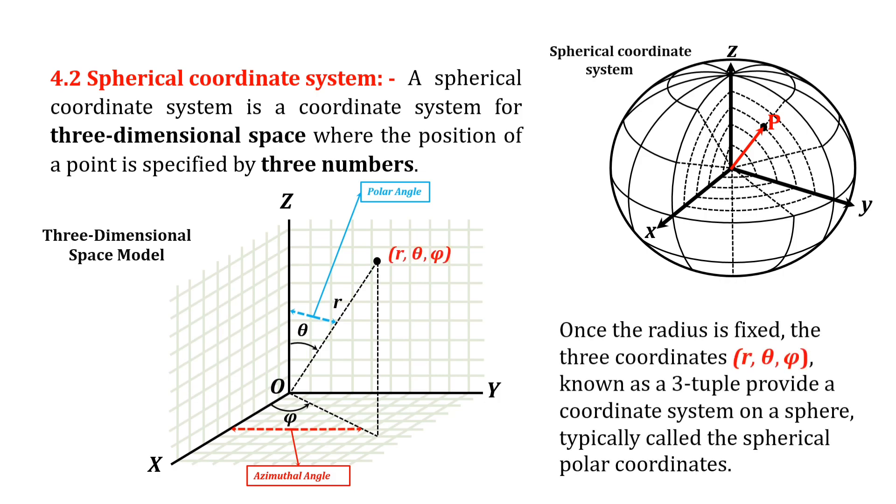Once the radius is fixed, the three coordinates R, theta, phi, known as a three-tuple, provide a coordinate system on a sphere, typically called the spherical polar coordinates.